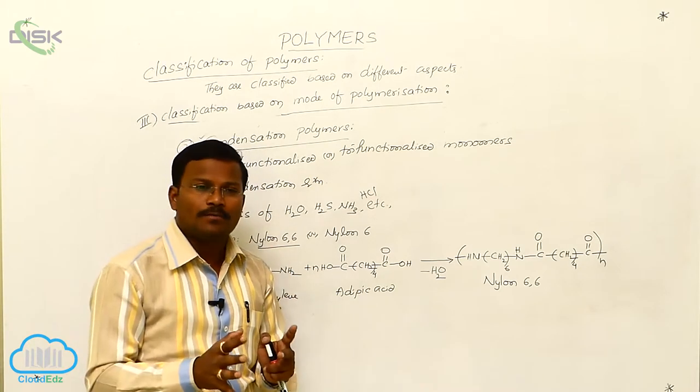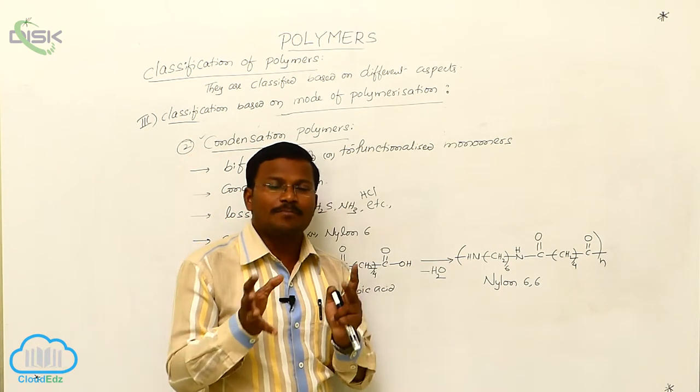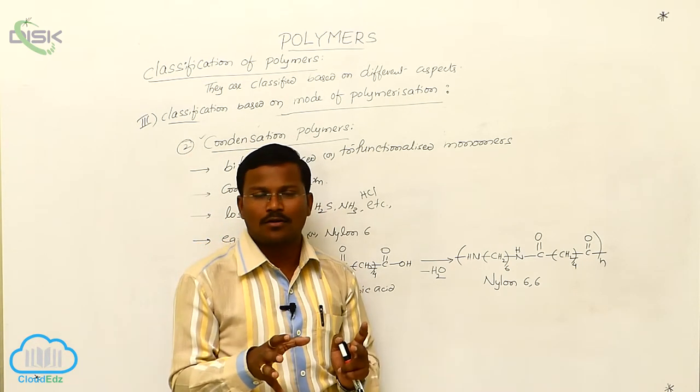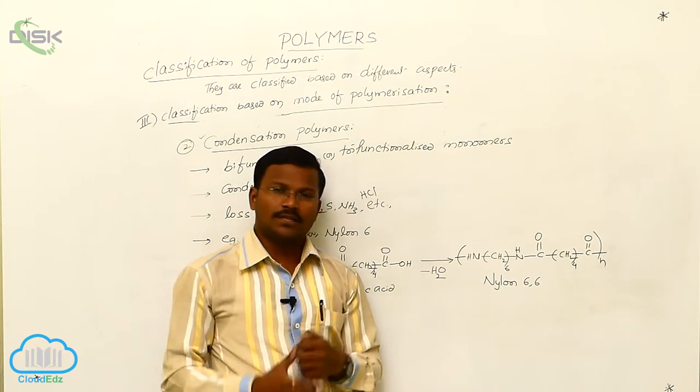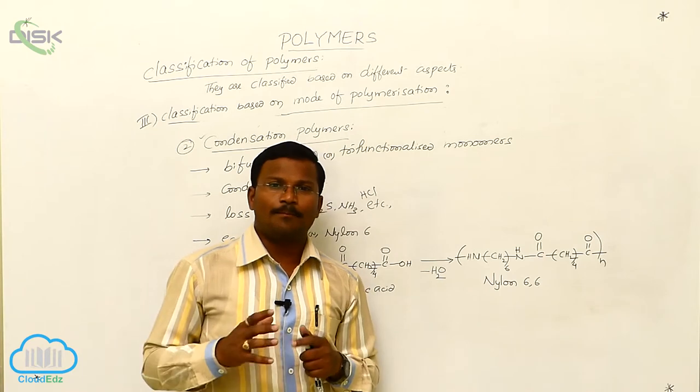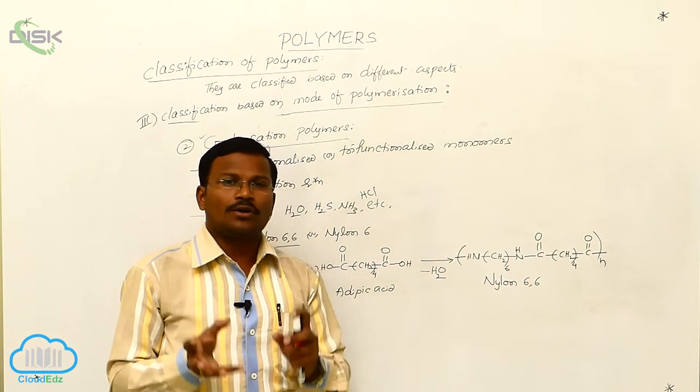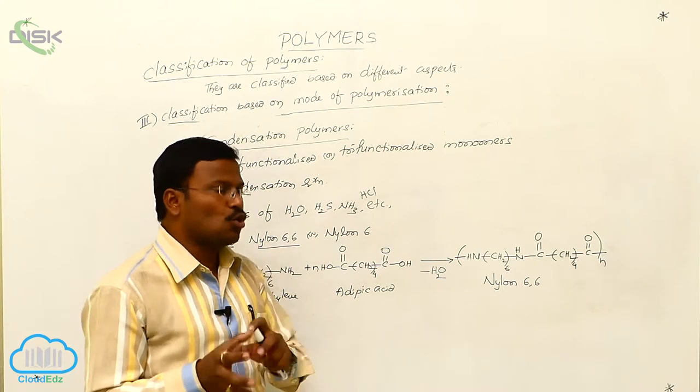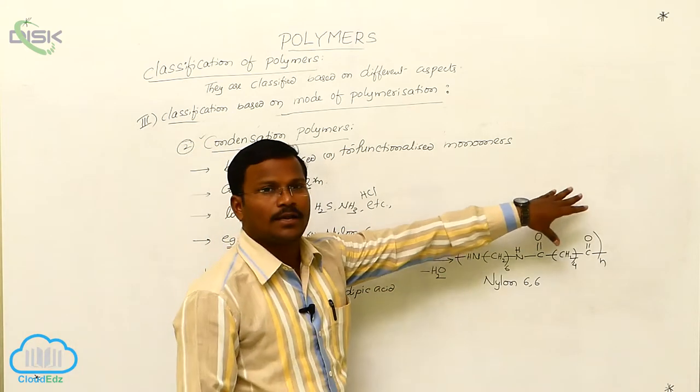The polymers resulting from addition polymerization are called addition polymers. These are again two types: homopolymers and copolymers. What are homopolymers? Those addition polymers resulting from the addition reaction of similar type of monomers are called homopolymers. Example is polythene. And what are copolymers? Addition polymers which result from two or more different monomers are called copolymers. Example is buna-n.